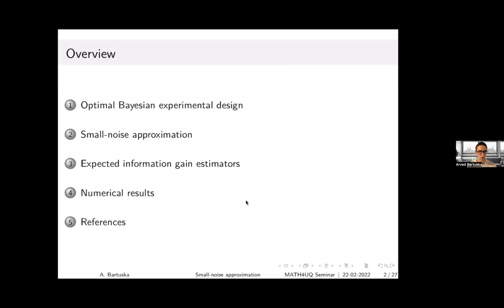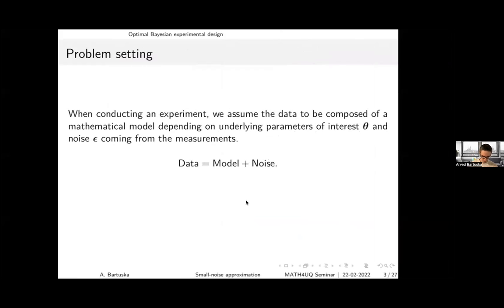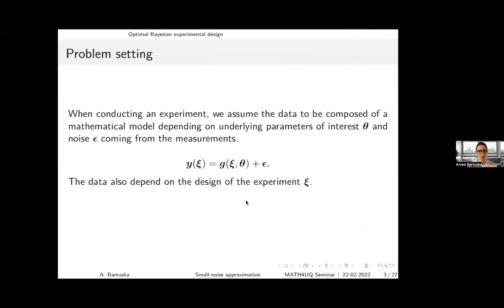If you conduct an experiment — scientific or otherwise — you find a mathematical model that depends on parameters of interest you wish to learn about. Your data is given by this model plus noise. We assume additive noise: the data y equals the mathematical model g depending on the parameters of interest, plus the noise.